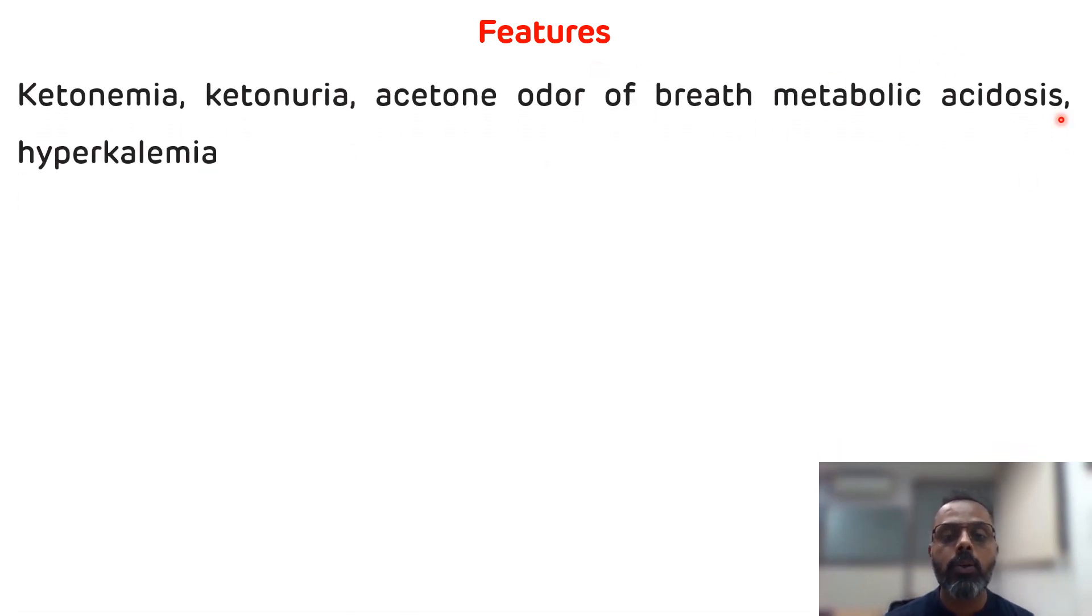Now, what are the features of ketosis? Ketosis is characterized by ketonemia (increased level of ketone bodies in the blood), ketonuria (excretion of ketone bodies in the urine), and acetone odor of breath (fruity smell). Apart from these, there is also metabolic acidosis and hyperkalemia (increased level of potassium in the blood).